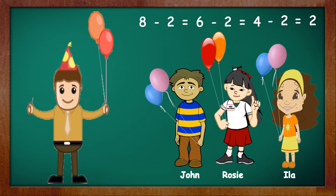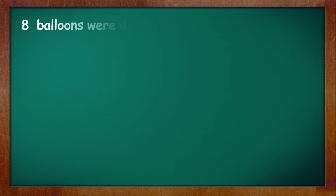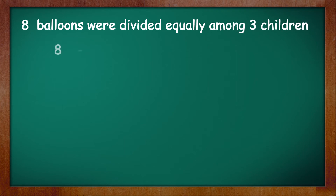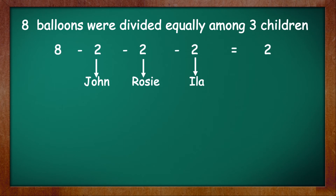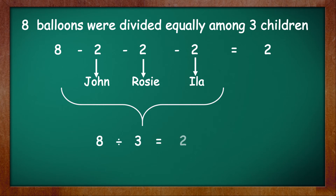He is unable to give the remaining two balloons to the children because he has only two balloons left and there are three children. In this example, you can see that when eight balloons were divided equally among three children, each child got two balloons and two balloons were left over. This division statement can be written as: 8 divided by 3 is equal to 2, with 2 balloons left.